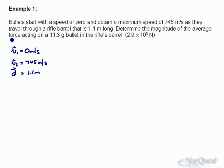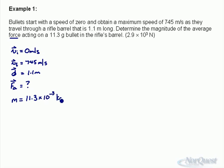It says determine the magnitude of the force, so we want to know the force being applied — I use F_A for applied force. Some previous instructors may use T or just F; it's just a subscript so you understand what the force is. They give us the mass in grams, so I'm going to change that to kilograms right now: 11.3 grams is 11.3 times 10 to the negative 3 kilograms.